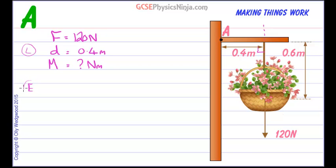Here's the equation. Moment is equal to force multiplied by the perpendicular distance from the pivot to the line of action of the force. Brilliant.